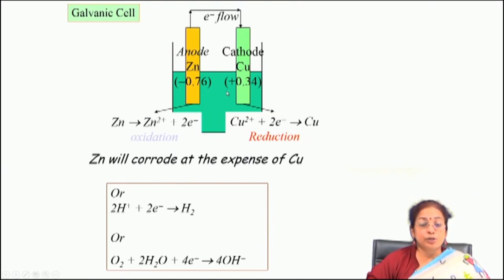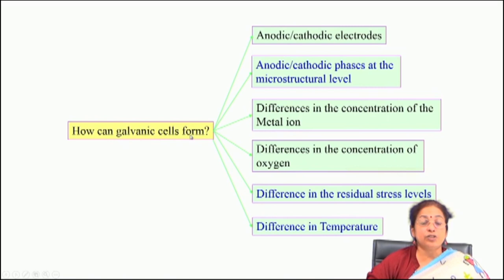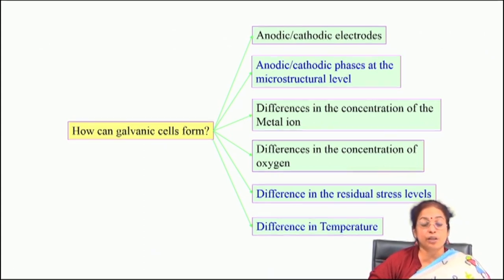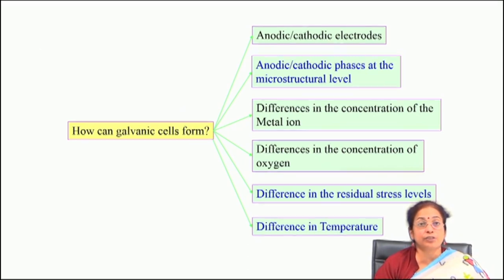The driving force for galvanic corrosion is the potential difference — the EMF difference of the two metals when joined together in an aqueous environment. This is the case for zinc and copper: when immersed in hydrochloric acid solution and properly connected, zinc corrodes at the expense of copper. Copper is actually protected, but zinc goes on corroding to a large extent. Galvanic corrosion is observed not only when two dissimilar metals are connected, but also by other reasons.